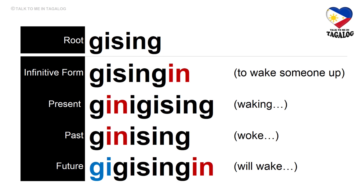Root word: gising. Infinitive form: gisingin — meaning to wake someone up. Present tense: ginigising — waking someone up. Past tense: ginising — woke someone up. Future tense: gisingin — will wake someone up.